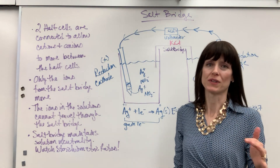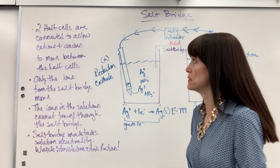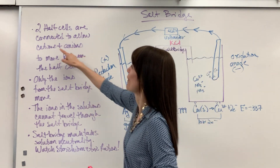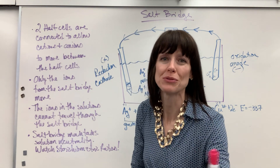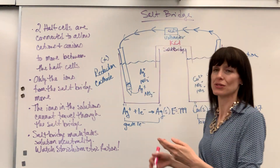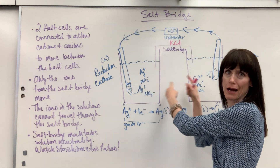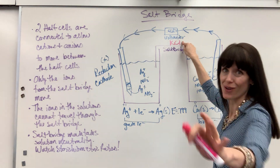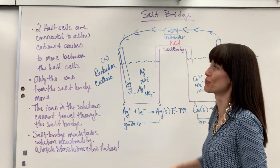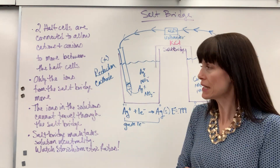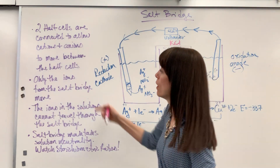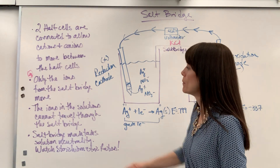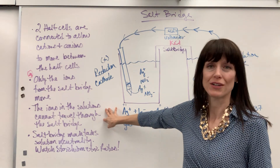Here's the official definition for salt bridge — and I'll show you why it's confusing. Two half cells are connected to allow cations and anions to move between half cells. That's why students think the reaction ions are moving. No — the cations and anions that move are only the salt. Only the ions from the salt bridge actually move. I'm putting a star by it.